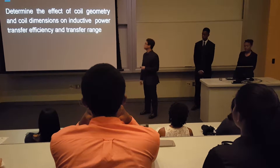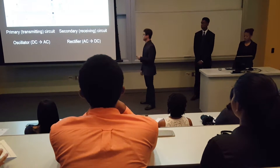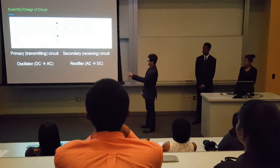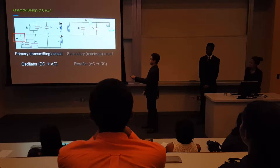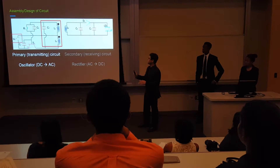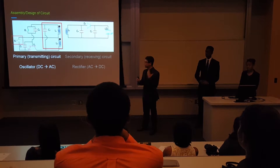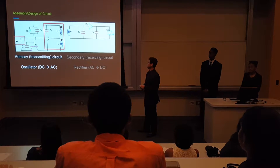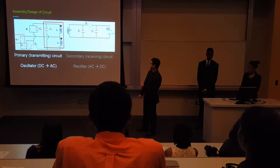The objective of our experiment was to determine the effects of coil geometry and dimensions on inductive power transfer efficiency and transfer range. To do this, we designed a circuit operating on inductive coupling, composed of a primary transmitting circuit and a secondary receiving circuit. Since we used a 9-volt DC battery as our power source, we ran the power through an oscillator to generate AC current, as required by Faraday's Law — a changing flux is needed to induce a voltage, which an alternating current provides by creating an alternating magnetic field.